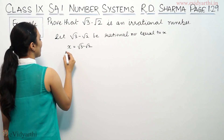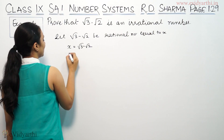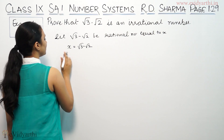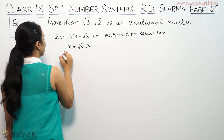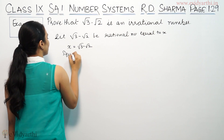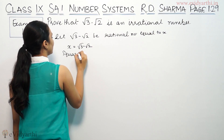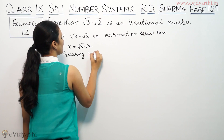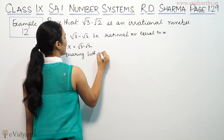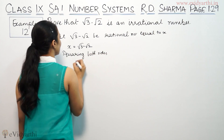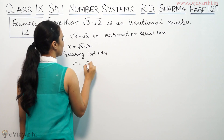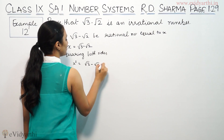Now, if we are squaring both sides, squaring both sides gives us x squared equals root 3 minus root 2, all squared.